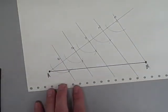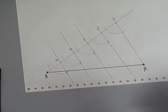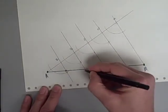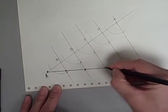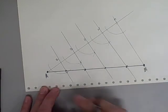And so those lines split up AB, and it splits it up into five equal parts. There we go.